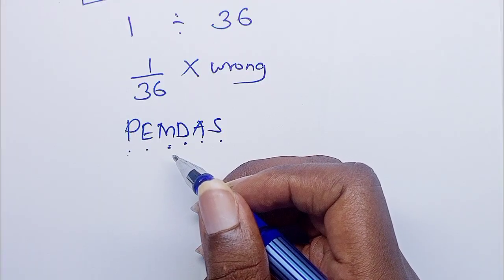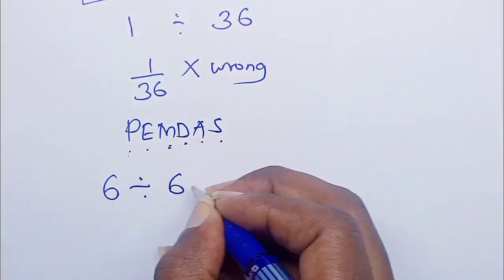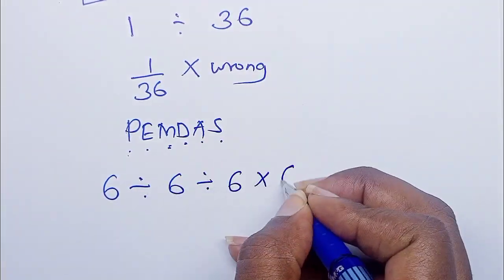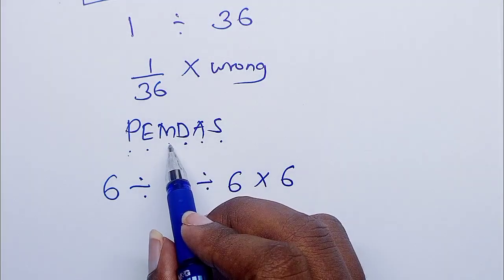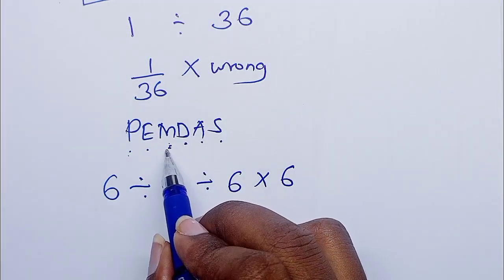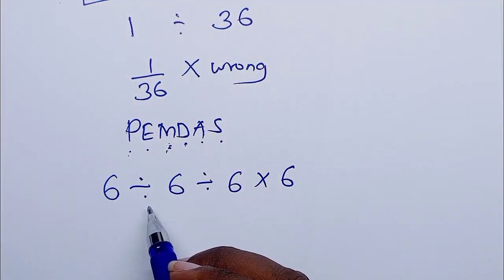So we have 6 divided by 6 divided by 6 times 6. Multiplication. We have division and multiplication. We've said whichever appears first between multiplication and division is what you consider first. And in this case, we have division and division.